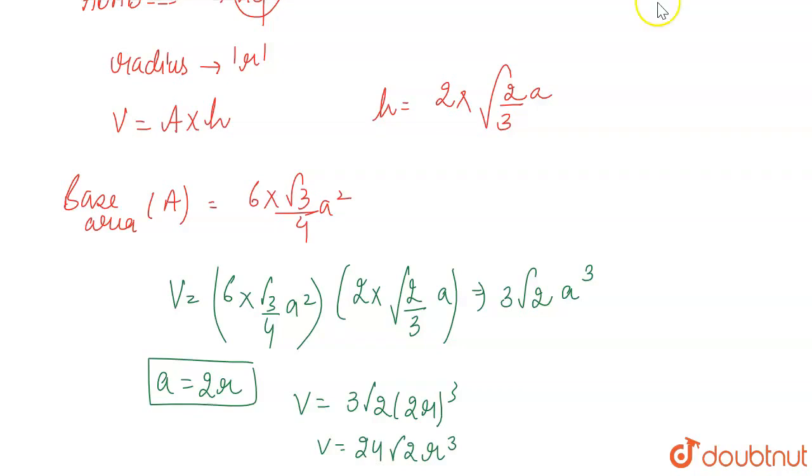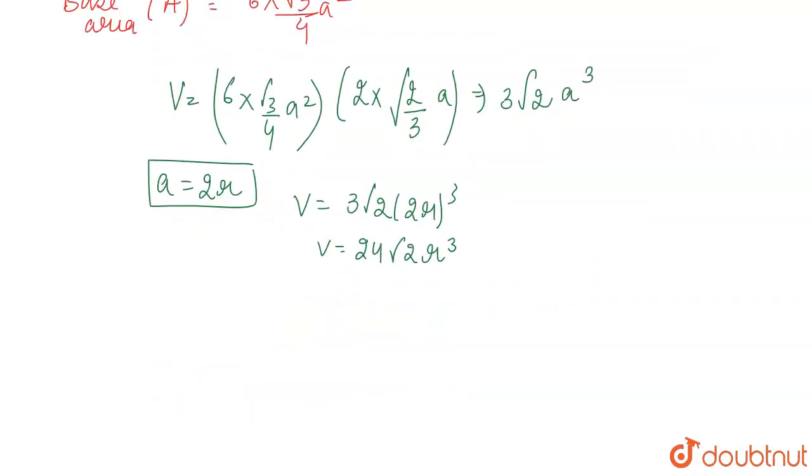Number of atoms in HCP unit cell, how many? You have 12 atoms in the corners and every corner has a contribution of 1/6 in HCP unit cell, plus 2 face centers which have a contribution of half, then 3 atoms in body center. Total number of atoms? 6.